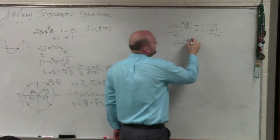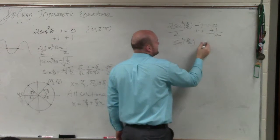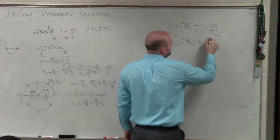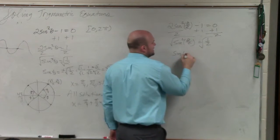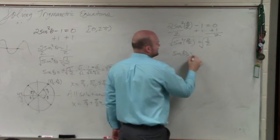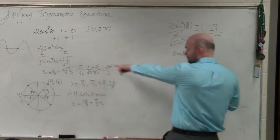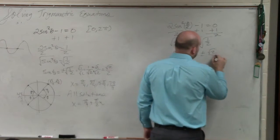And we get sine of theta divided by 2, or sine squared of theta, equals 1 half. We square root. And we get sine of theta divided by 2 equals plus or minus, as we showed over here, square root of 2 over 2.